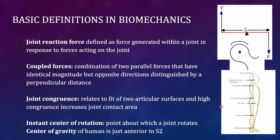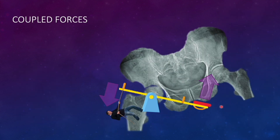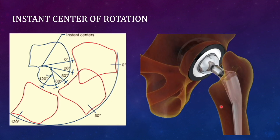The instant center of rotation is the center of rotation of a joint at one particular time. The knee joint is not perfectly round but anteroposteriorly elongated — ellipsoid in the sagittal plane — so as flexion occurs, the center of rotation changes posteriorly. In contrast, the hip joint is assumed to be perfectly spherical, so its instant center of rotation is assumed to be at one fixed point.